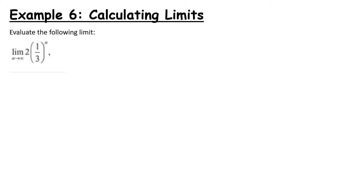We need to think through this logically. If I have one third to a power, what happens as that power gets bigger and bigger? Taking a half as an example: a half squared is a quarter, a half to the power of 3 is 1 over 8. As the power gets bigger, the fraction is getting smaller and smaller.